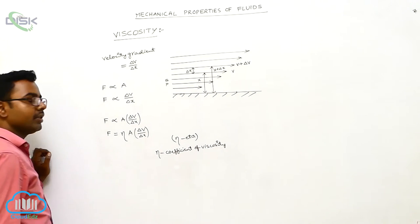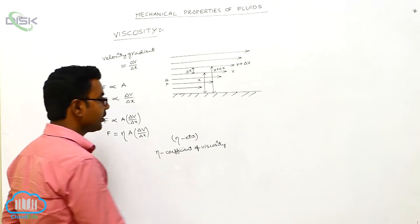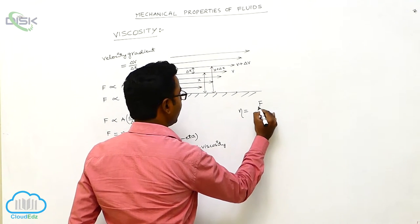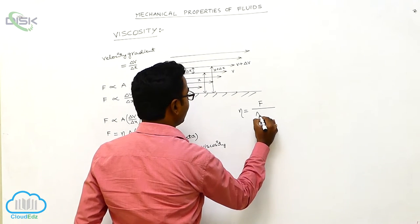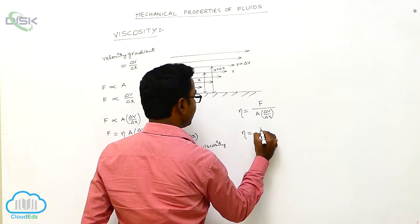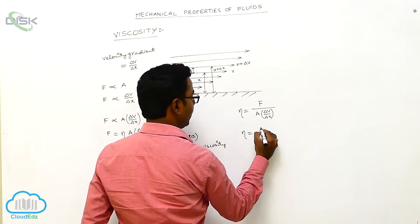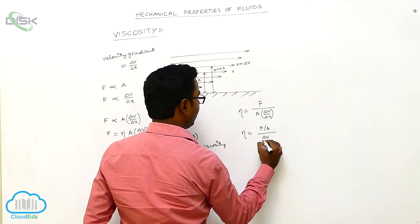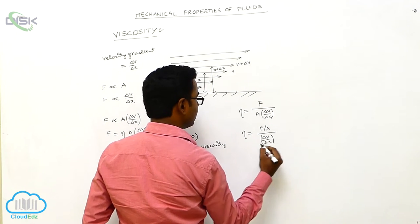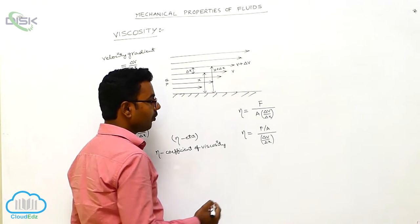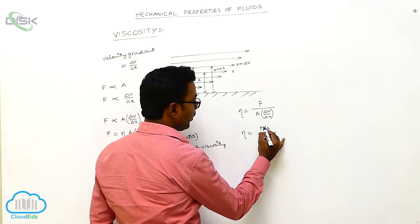From this equation, the coefficient of viscosity is defined as: η = F / (A × ΔV/ΔX), which can also be written as η = F / A ÷ (ΔV/ΔX). Now we can write the units.